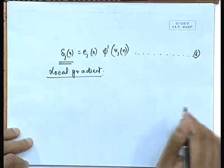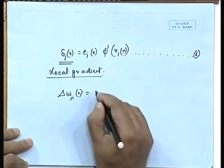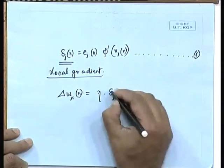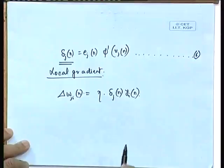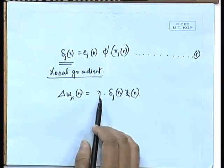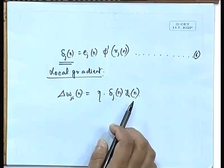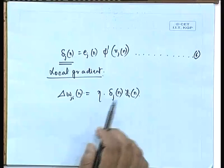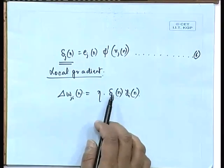With the local gradient, we express the weight correction as: delta_W_ji(n) = eta × delta_j(n) × Y_i(n), where eta is the learning rate, delta_j(n) is the local gradient, and Y_i(n) is the input to neuron j. Since Y_i(n) is known and eta is a given learning rate, the key problem is how to compute the local gradient.